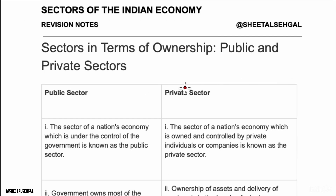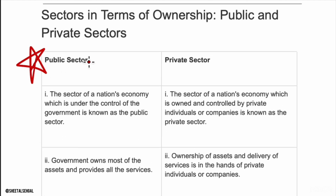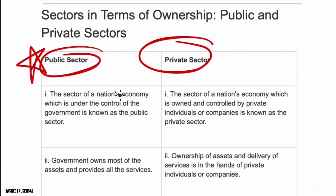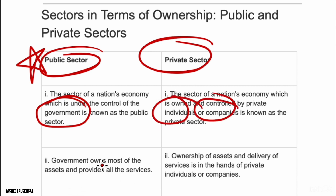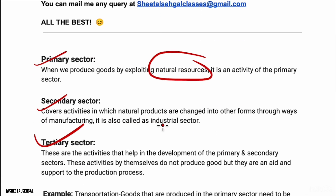In the public sector, the government controls and owns most of the assets. The main motive is benefit to the people, and the government raises money through taxes. Examples include police, army, health services, and railways. In the private sector, a private individual or company owns the assets. The main motive is profit, and money is raised privately. Examples include Reliance and Disco.